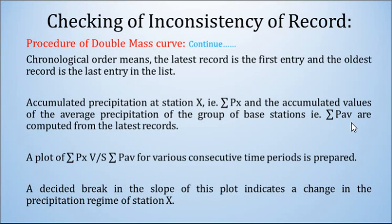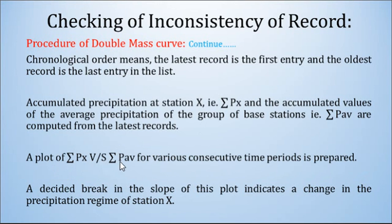Accumulated precipitation at station X, that is summation PX, and the accumulated values of the average precipitation of the group of base stations, that is P-average, are computed from the latest records. Suppose we take 6 base stations apart from station X — stations 1, 2, 3, 4, 5, 6. Then summation P-average is the average of all those stations together. A plot of summation PX versus summation P-average for various consecutive time periods is then prepared.